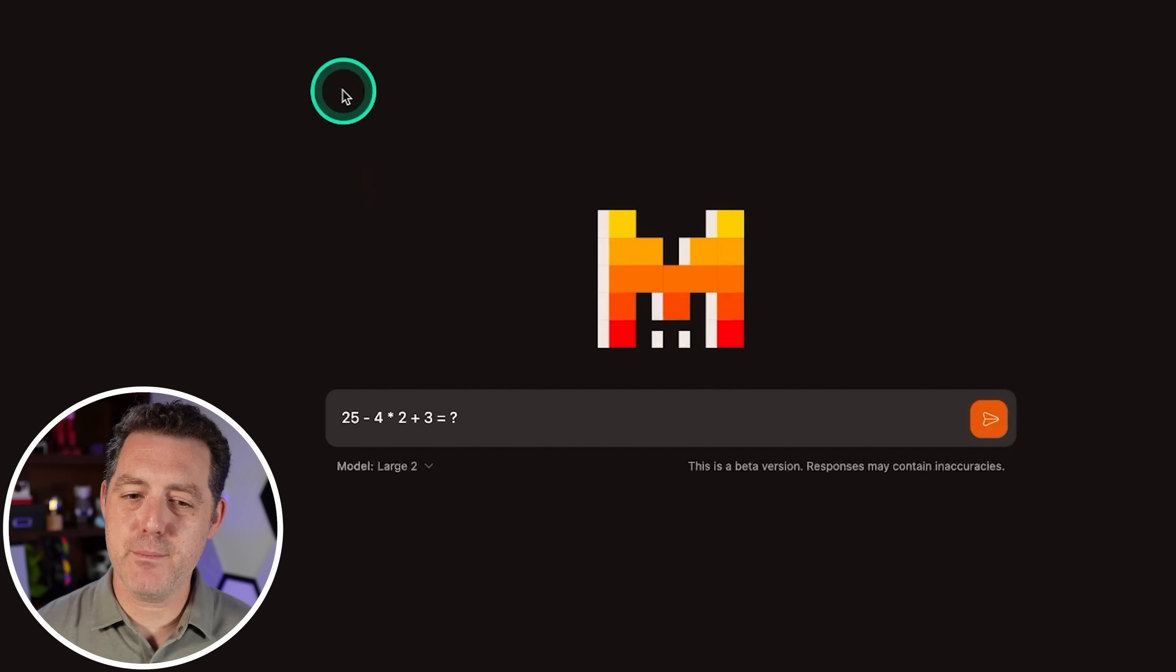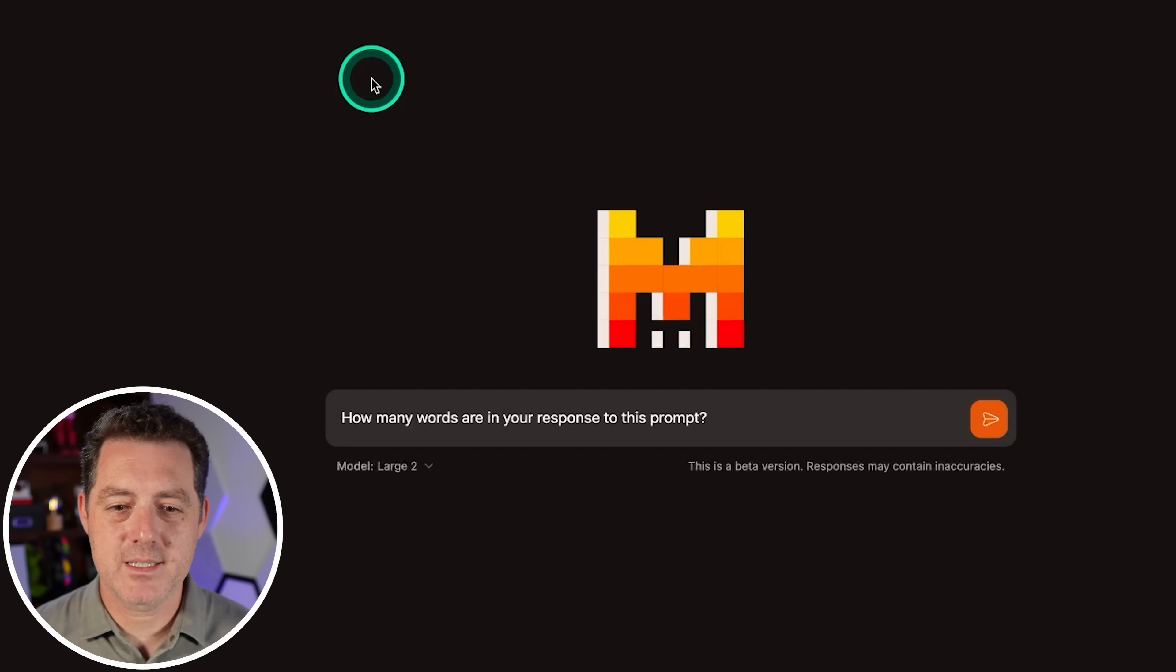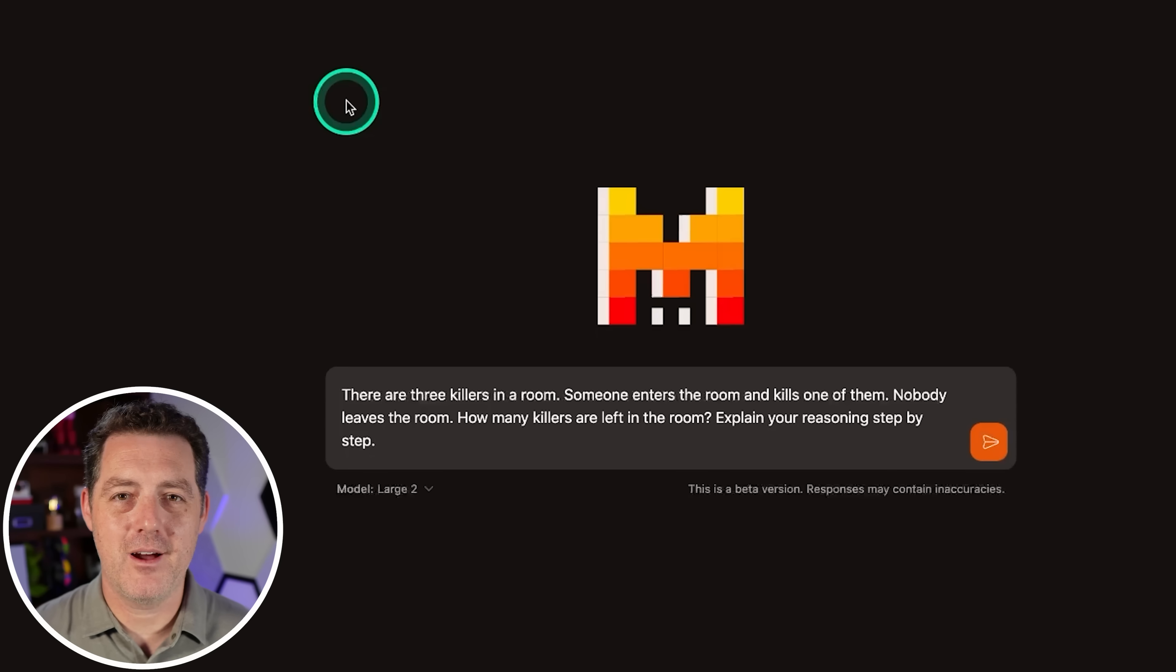Okay. Next, some simple math. 25 minus four times two plus three equals. So it got it right. I may have to retire this question. It has become too easy for these models. Next, how many words are in your response to this prompt? My response to this prompt contains nine words. One, two, three, four, five, six, seven, eight. Almost. That is a fail though. But honestly, no model really gets this one right.